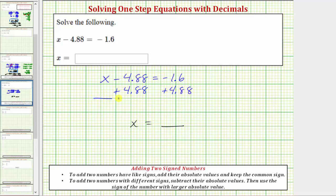Notice how here I show the addition vertically, or underneath the equation. Some textbooks would show the addition horizontally, and that would look like this: x minus 4.88 plus 4.88 equals negative 1.6 plus 4.88.